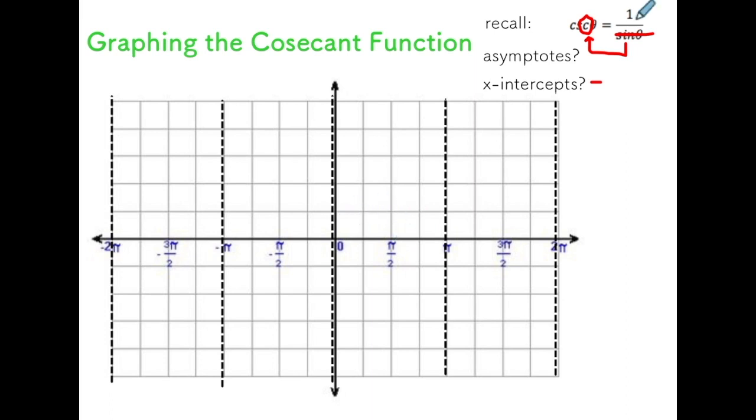I'm going to start at pi over 2. If I sub in pi over 2 into my reciprocal function, which is 1 over sine, if I take the sine of pi over 2, I know I get 1. You can see that using a unit circle, you could use a calculator. Subbing in a few other points, by sub in something like 3 pi over 2, for instance, you'll see that you get negative 1.